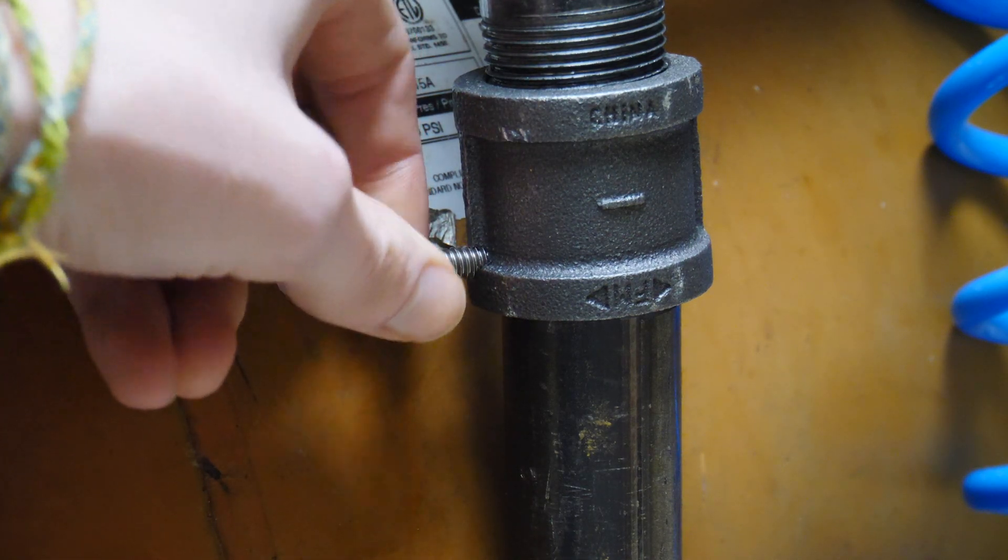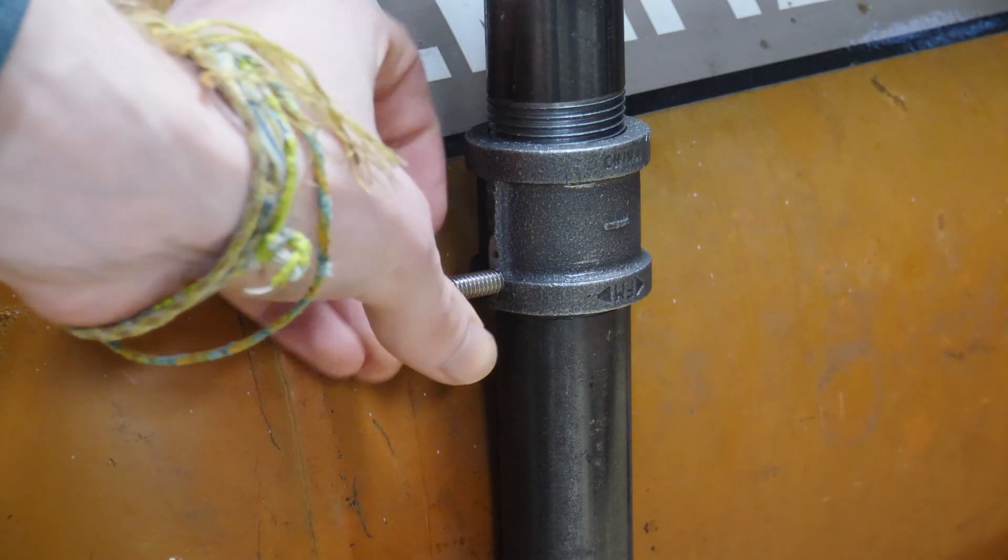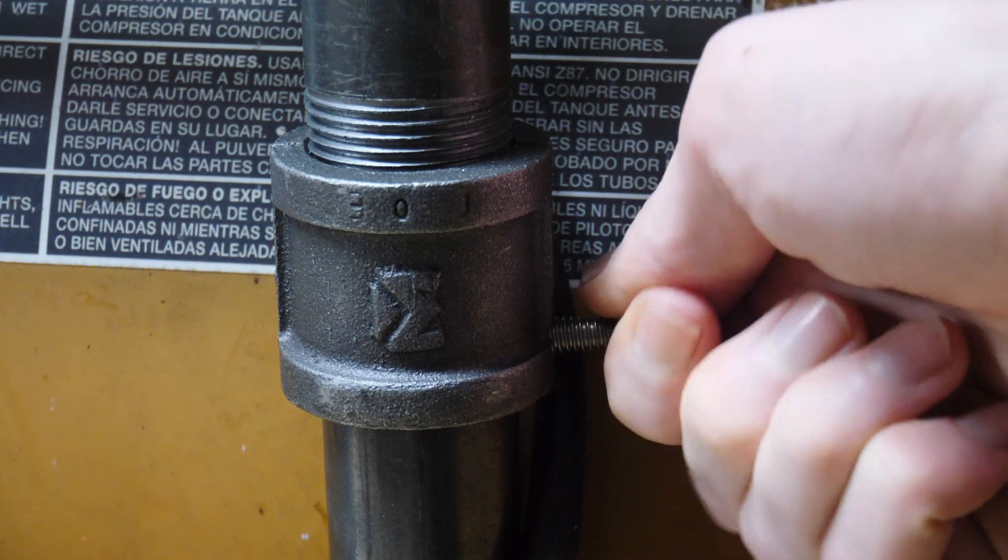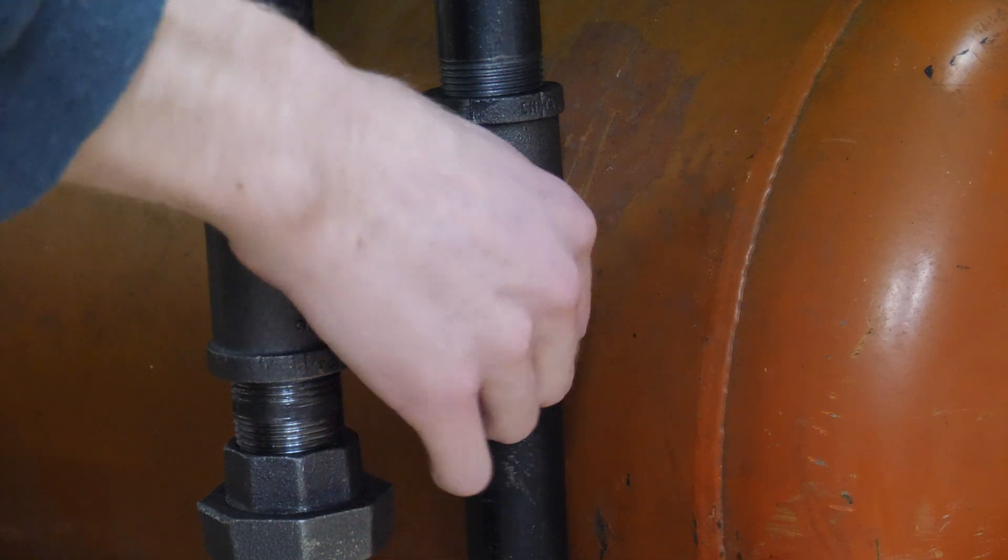These are the set screws. We're using these quarter 20 set screws to connect the top and the bottom, so you can see how that works to hold everything together. This is the one on the T.